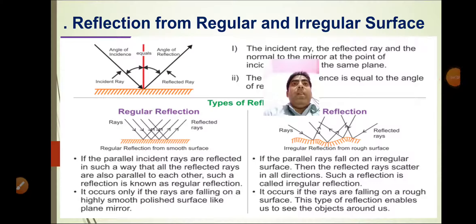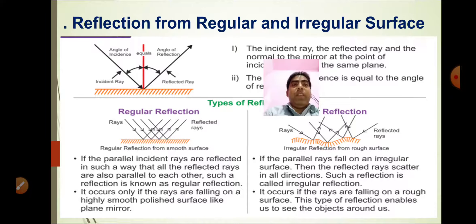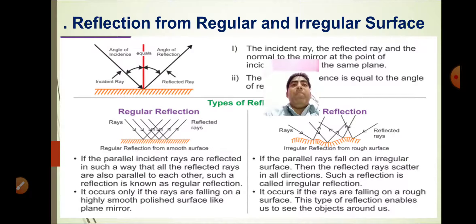When we use a mirror at home, we look at it and see our image. Now, reflection of light depends upon the nature of the surface. A rough or irregular surface reflects the incident beam of parallel light in different directions — for example, light reflected by books, newspapers, or tables. A smooth or regular surface reflects the incident beam of light in one direction — for example, light reflected from a mirror.